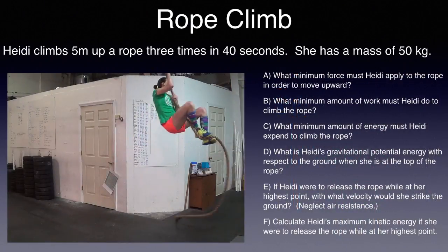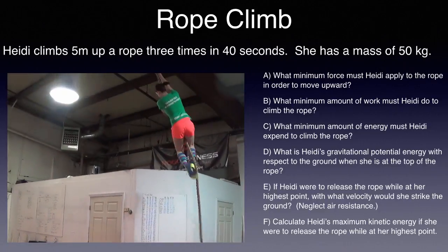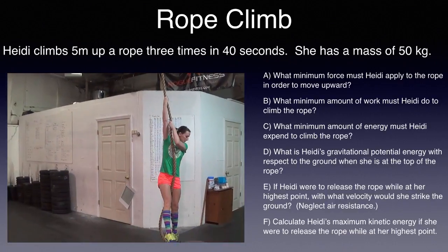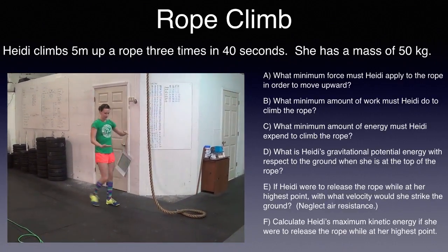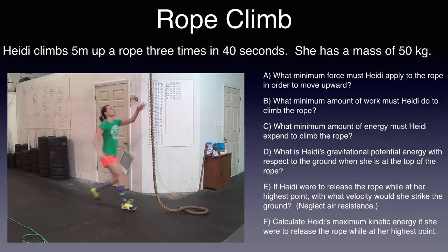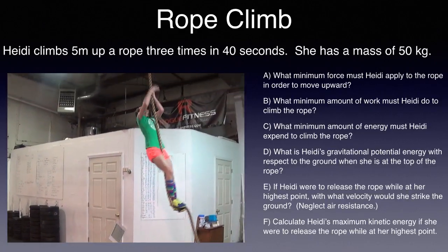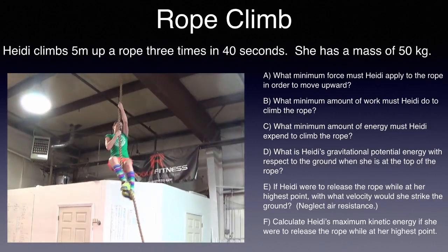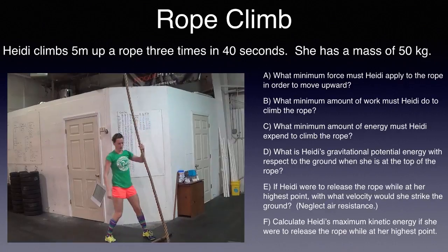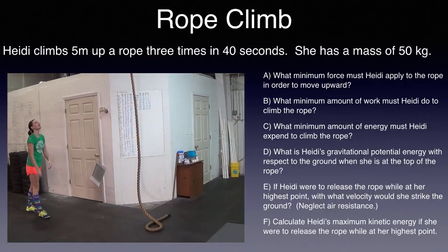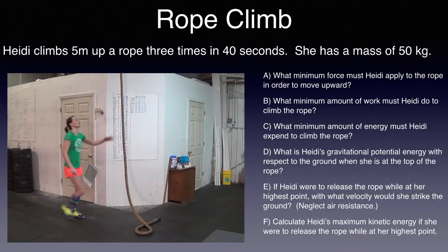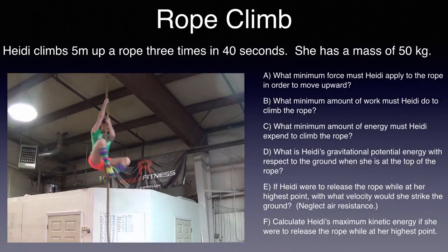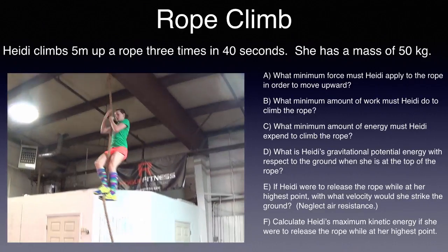Heidi climbs 5 meters up a rope 3 times in 40 seconds. She has a mass of 50 kilograms. A. What minimum force must Heidi apply to the rope in order to move upward? B. What minimum amount of work must she do to climb the rope? C. What minimum amount of energy must Heidi expend to climb the rope? D. What is Heidi's gravitational potential energy with respect to the ground when she's at the top of the rope? E. If Heidi were to release the rope while at her highest point, with what velocity would she strike the ground? Neglect air resistance. And finally, F. Calculate Heidi's maximum kinetic energy if she were to release the rope while at her highest point.